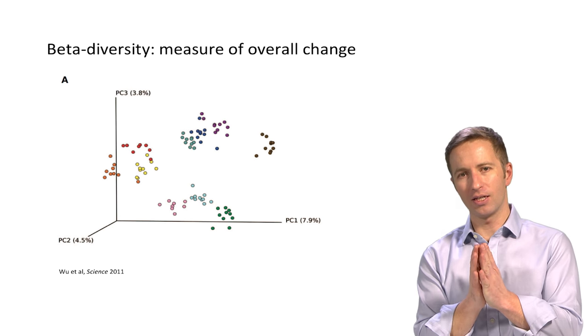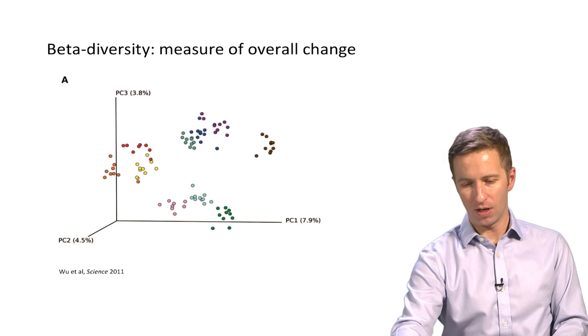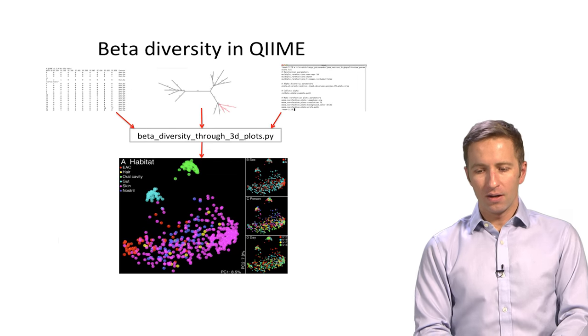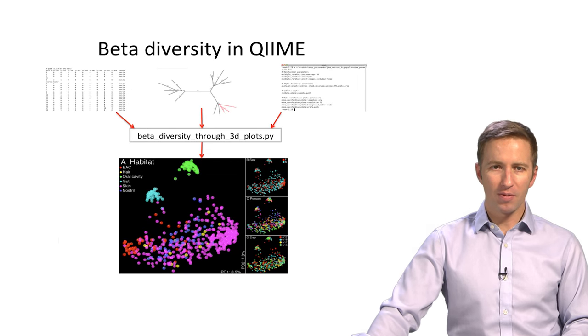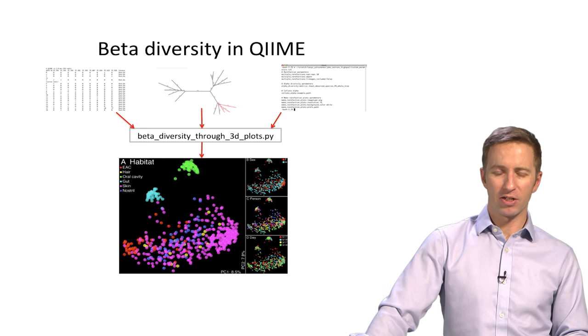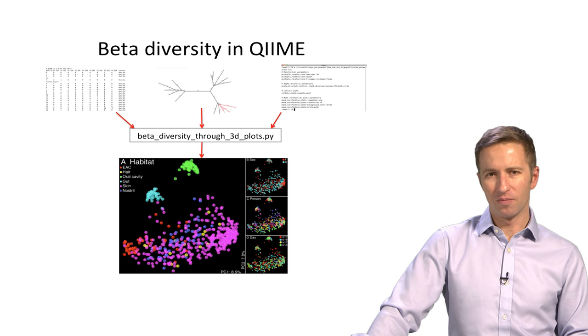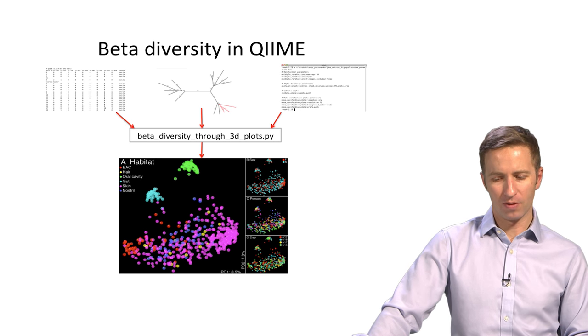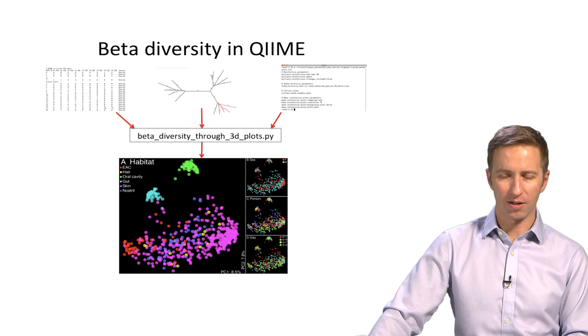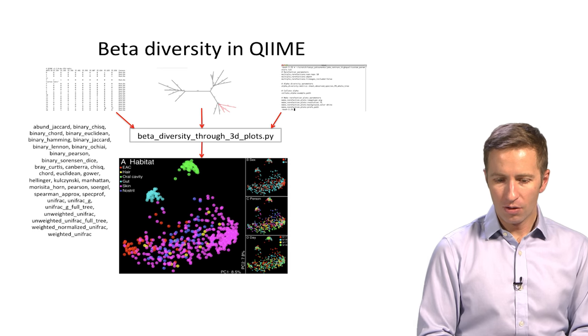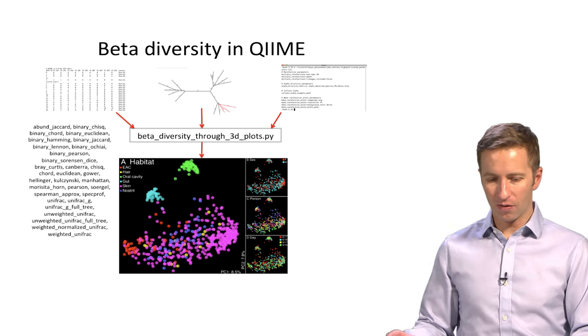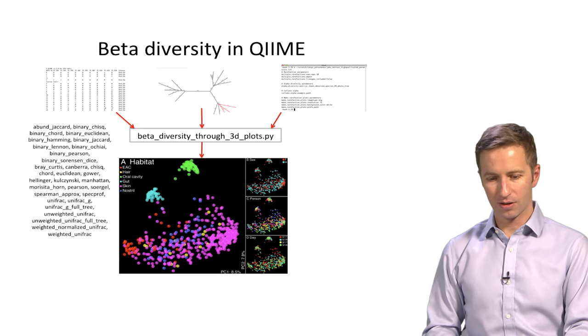So it's a nice way of seeing that there was, on average, an overall shift in the community. You can run beta diversity in QIIME. Most of the common beta diversity metrics are in there. There are some fancier ones with some really important applications that are in R that we're going to talk about, too.